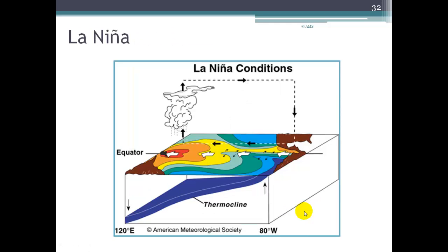During the La Niña phase, the trade winds are stronger than usual, giving an even more vigorous push of warm water to the western Pacific. We have low pressure there and a very strong, pronounced thermocline — much more so than in the El Niño picture — along with strong upwelling of cold water off South America. So those are the three situations: normal, El Niño, and La Niña.